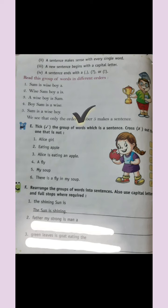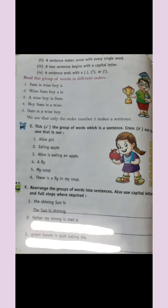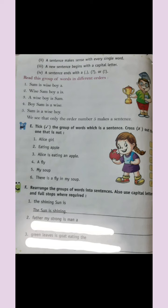Now we have to do some exercise. Tick the group of words which is a sentence, and cross out the one that is not. In this picture you can see: one — 'Alice a girl' — is it a sentence? Two — 'eating apple' — is it a sentence? Three — 'Alice is eating an apple' — yes, it is right. Four — 'a fly'; five — 'my soup'; six — 'there is a fly in my soup.' Sentence six is also correct because it starts with a capital letter, ends with a full stop, and all words are in proper order — so it makes complete sense.